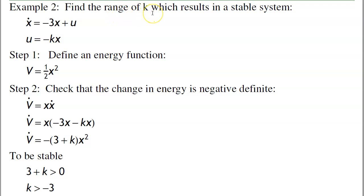A more useful application of Lyapunov is finding the range of k for stability. If I have a system with full state feedback, I define the energy function V equals one-half x squared, take the derivative and substitute. As long as V dot is negative definite — which requires k greater than minus 3 — the system is stable. Note that Lyapunov stability doesn't prove instability if this condition fails; it only proves stability when the condition holds.